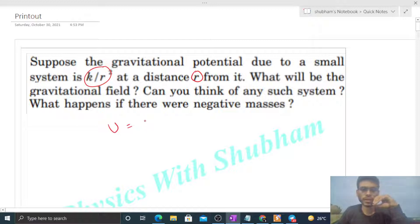Here we have U, the gravitational potential, as k/r². We want to find the gravitational field. What is the relationship between field and potential? Field is minus the gradient of potential, minus dU/dr. Just put the values: minus d/dr of k/r².